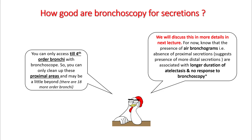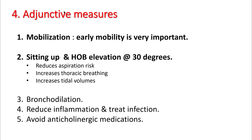Bronchoscopy can only access to the 4th-order bronchi, so you can only clean up proximal areas. Understand there are 18 more order bronchi further that need to be cleared. We will discuss more about the role of bronchoscopy in secretions in the next lecture. For now, understand that the presence of air bronchograms shows absence of proximal secretion and possibly the presence of distal secretion and atelectasis — these are associated with longer duration of atelectasis and minimal response to bronchoscopy.